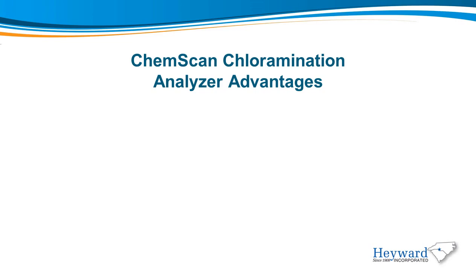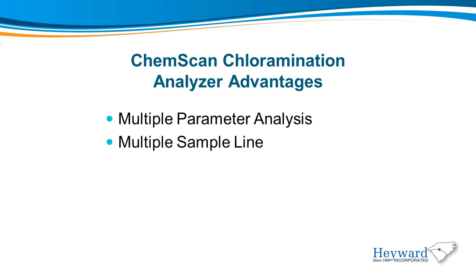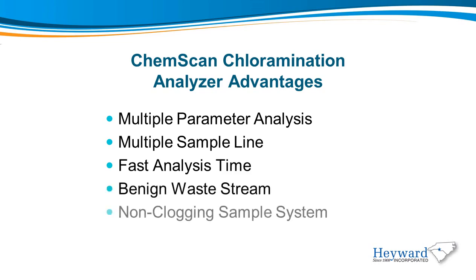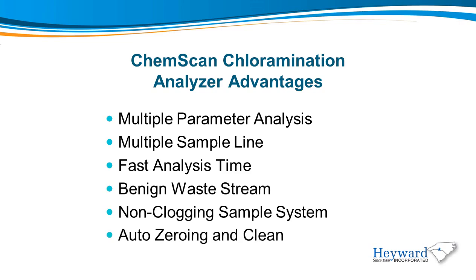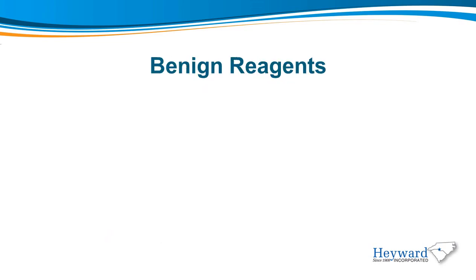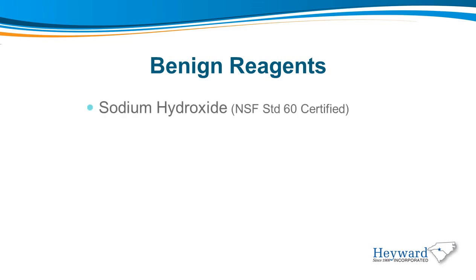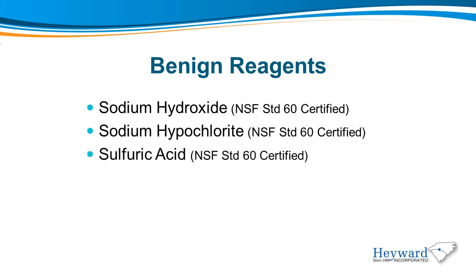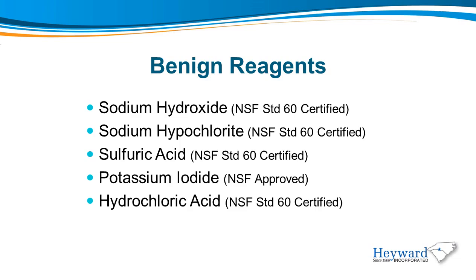ChemScan chloramination analyzer advantages include multiple parameter analysis, multiple sample line capability, fast analysis time, a benign waste stream, non-clogging sample system, and auto-zeroing and cleaning. The ChemScan analyzer uses benign reagents: sodium hydroxide, sodium hypochlorite, sulfuric acid, potassium iodide, and hydrochloric acid, all of which are NSF-60 certified.